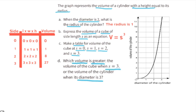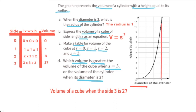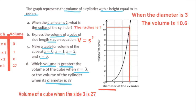Part D. Which volume is greater: the volume of a cube when S equals 3, or the volume of a cylinder when its diameter is 3? The volume of a cube when the side length is 3 is 27. Looking at the horizontal axis of the graph — the diameter — when the diameter of the cylinder is 3, the volume of the cylinder is between 10 and 11, specifically 10.6. Since 27 is greater than 10.6, the volume of the cube is greater.